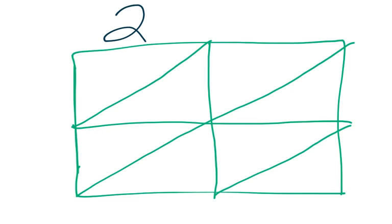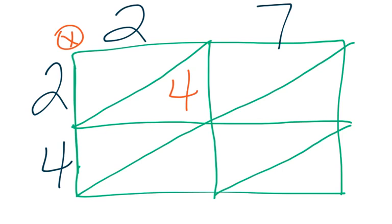I have 2, 7, 2, 4. Now multiply 2 times 2. We'll put a multiplication symbol there. 2 times 2 is 4. 2 times 7 is 14. 4 times 2 is 8. 4 times 7 is 28. Okay.